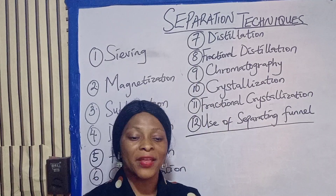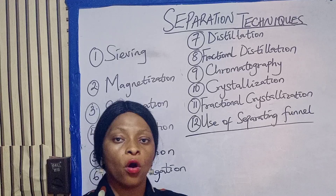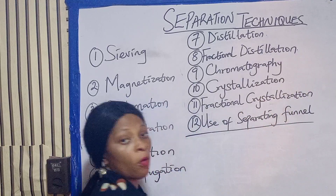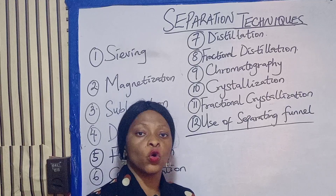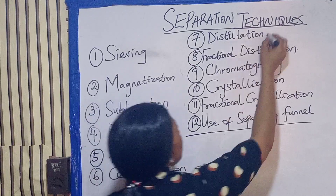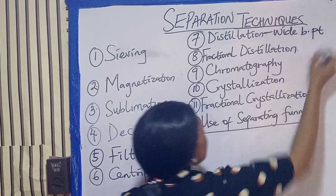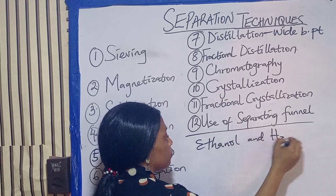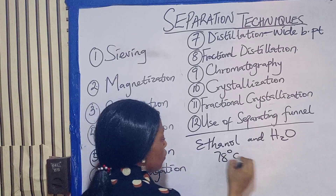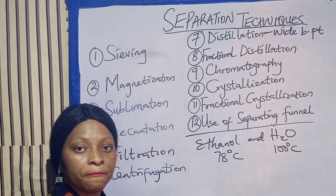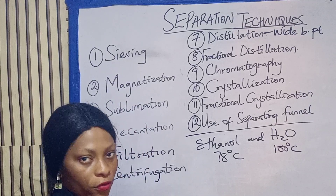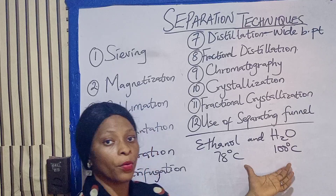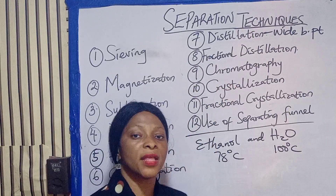The next one is distillation. Distillation is used to separate two or more miscible liquids that have wide boiling points. For example, a mixture of ethanol and water — ethanol boils at 78°C while water boils at 100°C. Ethanol will boil out first before the water, and the boiling points have a wide difference of 22 degrees.